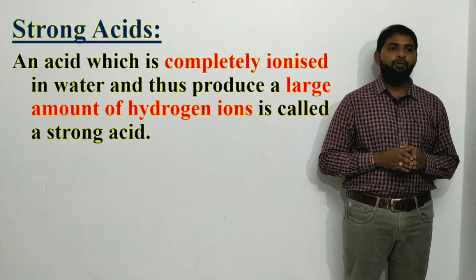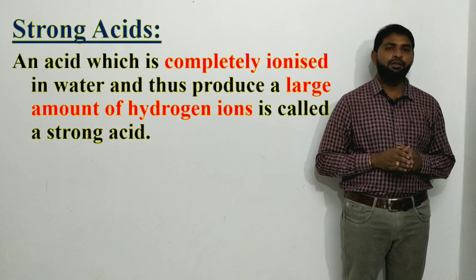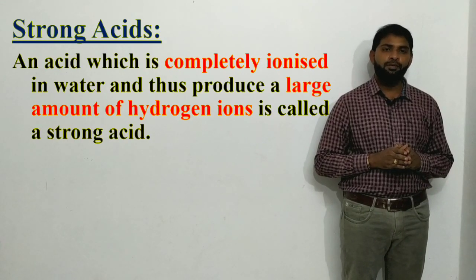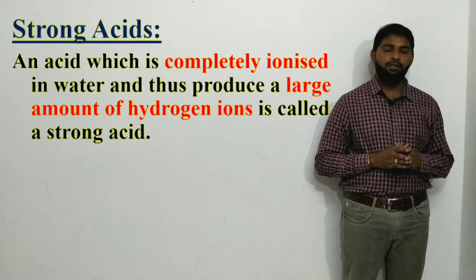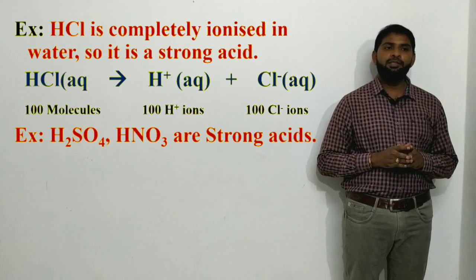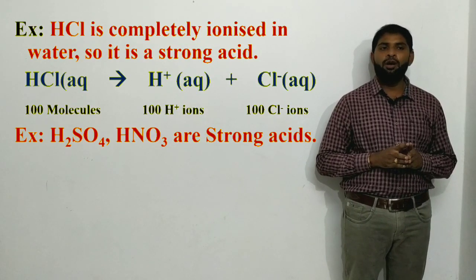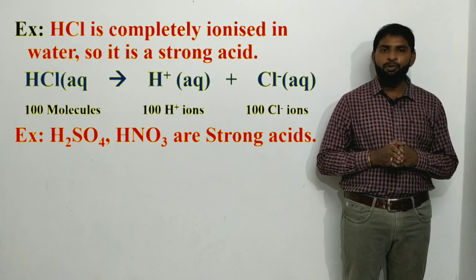Coming to strong acids — a strong acid is an acid which is completely ionized in water and thus produces a large amount of hydrogen ions. For example, HCl is completely ionized in water, so it is a strong acid.